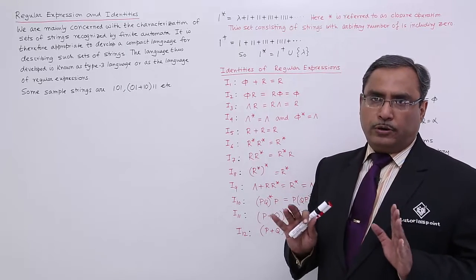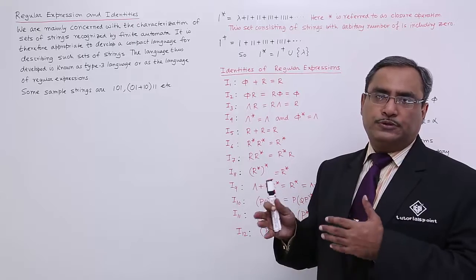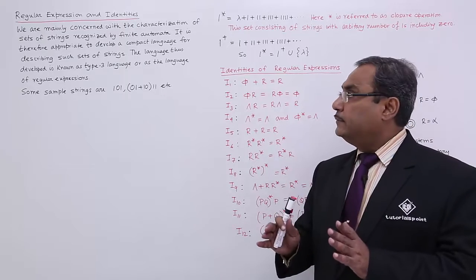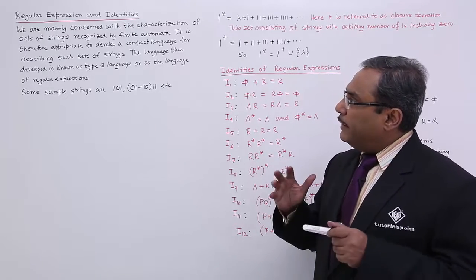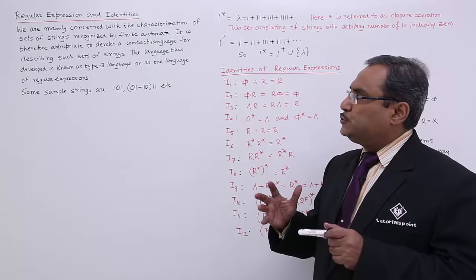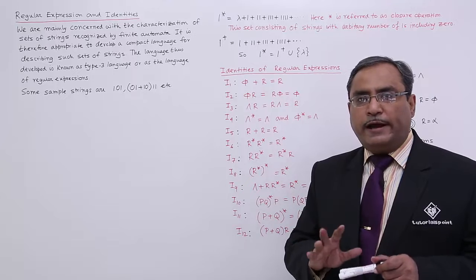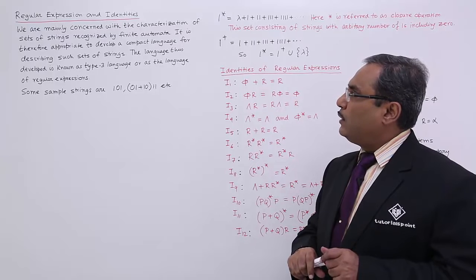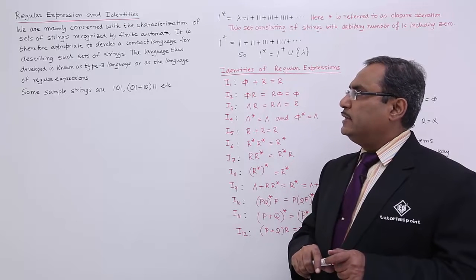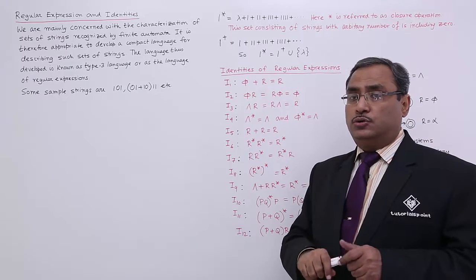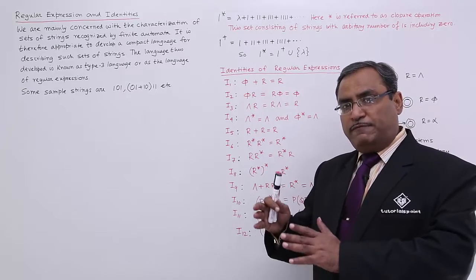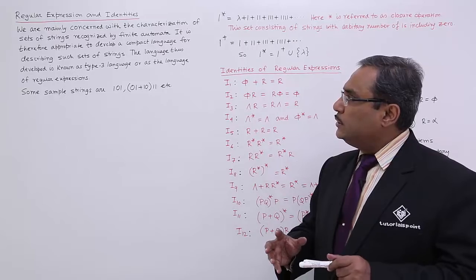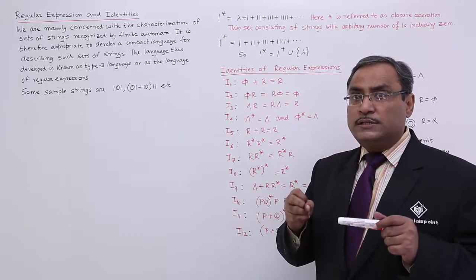We know what a finite automaton is — we have a finite number of states, finite number of input symbols, finite number of outputs, finite number of state transitions, and so on. Now, they are trying to formulate the set of strings which will be recognized by the finite automaton. It is therefore appropriate to develop a compact language for describing such sets of strings — those sets of strings which can be recognized by a finite automaton — so that it can describe those sets of strings.